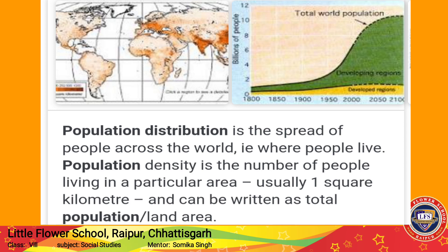Next topic is population distribution. Population distribution is the spread of people across the world — that is, where people live. Population density is the number of people living in a particular area, usually one square kilometer, and can be written as total population divided by land area.